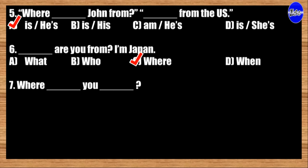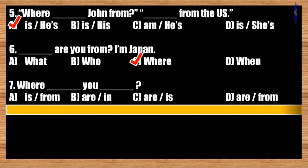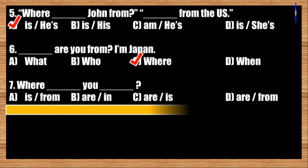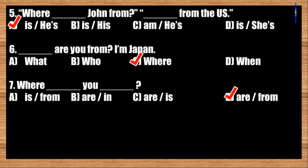Number seven: Where blank you blanked? A: is, from; B: are, in; C: are, is; D: are, from. The correct answer is option D. Where are you from?